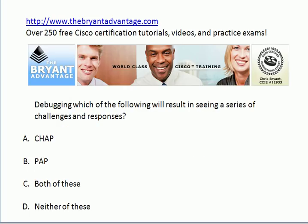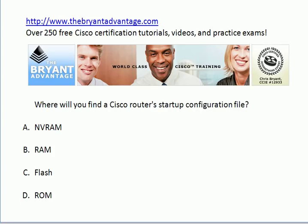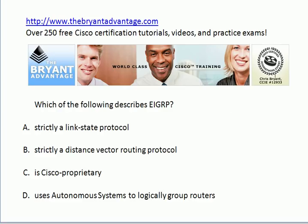Debugging which of the following is going to result in you seeing a series of challenges and responses? CHAP, PAP, both, or neither? We'll move on to the next question: where will you find a Cisco router's startup configuration file? You've got to know about all four memory types and what's in them for your CCNA exam. So where would I find the startup config file?